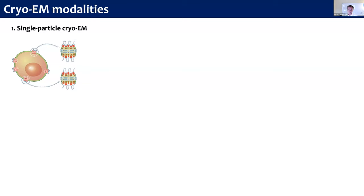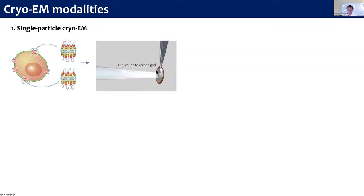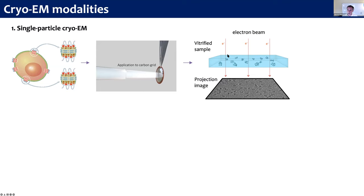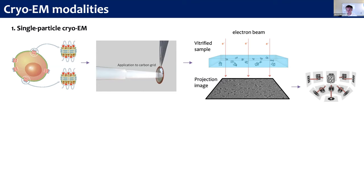There are a couple of different modalities. In single particle cryo-EM, we have a cell and a membrane protein we're interested in. We go through a purification process to isolate that protein from the cellular context. We deposit a drop on a cryo-EM grid, then plunge-freeze that grid, ending up with a thin layer of ice where our proteins are suspended. Then we take that to the microscope, shine the electron beam, and get 2D projection images, which we extract and combine computationally to get the 3D structure.